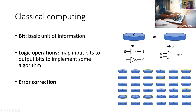A classical computer also has some set of logic operations — you take bits as input and output new bits depending on the inputs. For example, a NOT gate flips the value of a bit: input zero, output one, or input one, output zero. An AND gate takes inputs a and b and outputs a times b. You can string together a bunch of these logic operations to implement an algorithm, and the set of available logic operations determines what types of algorithms you can run.